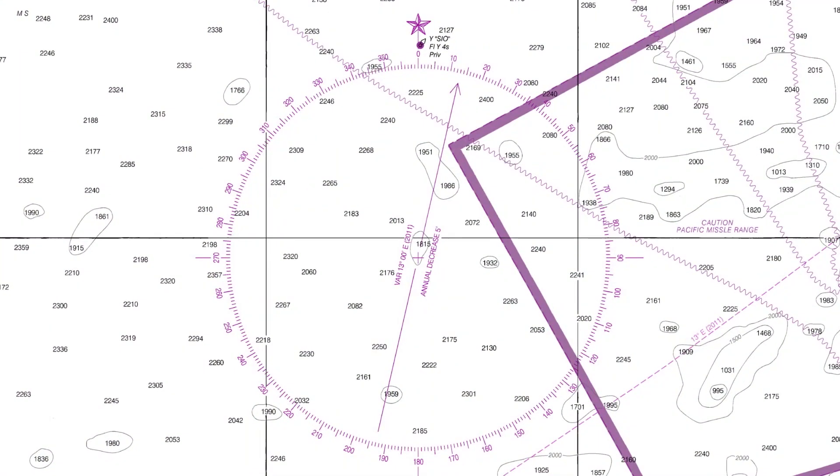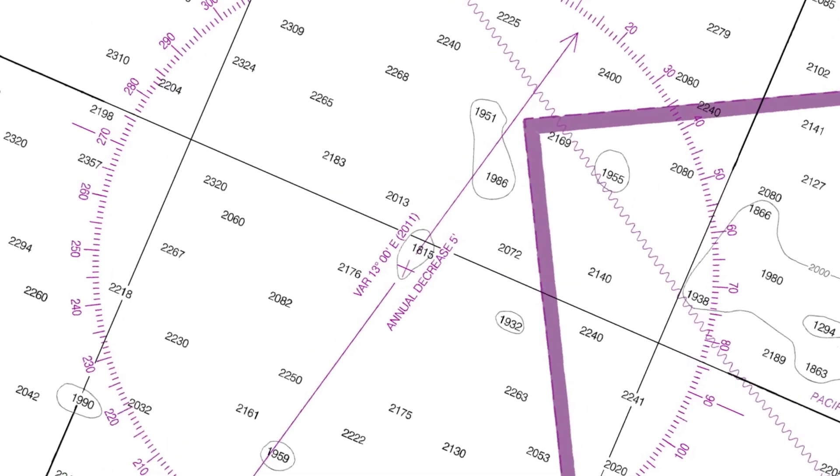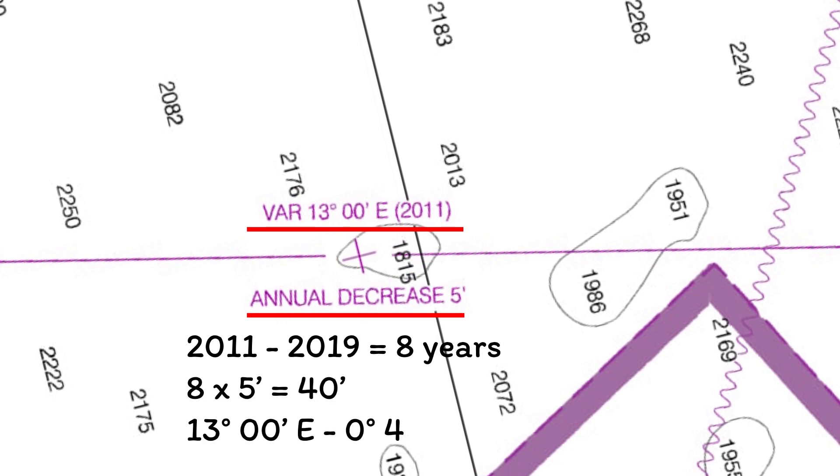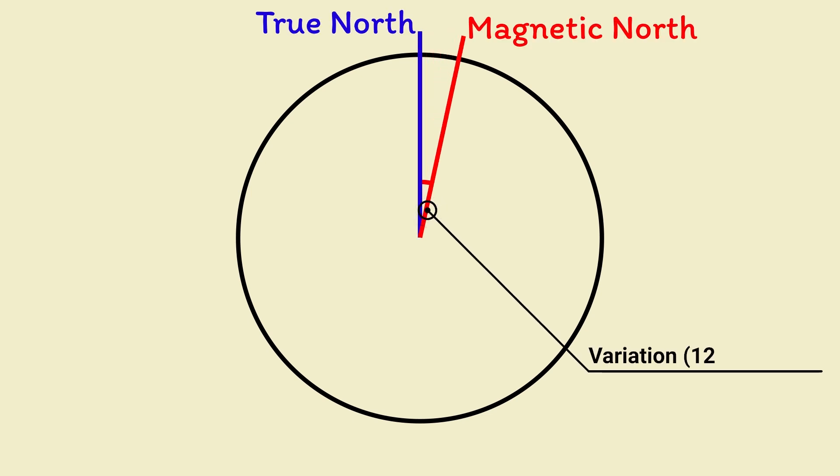You read it straight off the compass rose, and you can see in this case it was 13 degrees 0 minutes east in 2011, with a rate of change of minus 5 minutes each year. As it's now 2019, it's decreased by 40 minutes across those eight years, giving a current variation of 12 degrees 20 minutes east. The way to think of this is that the magnetic north pole is 12 degrees 20 minutes east of the true north pole.